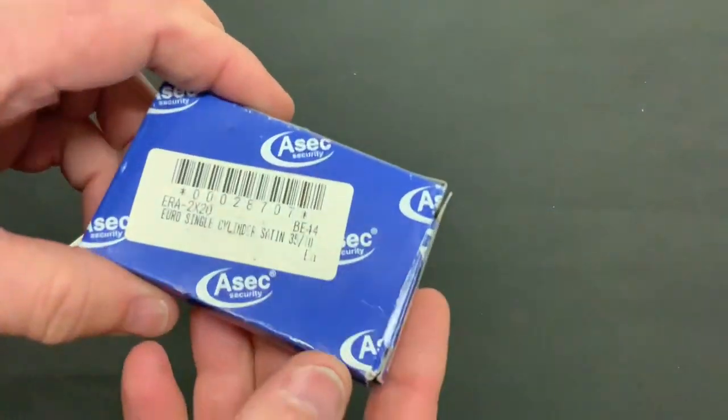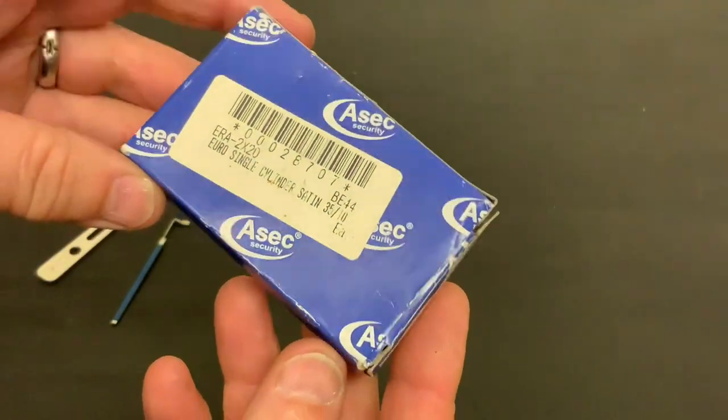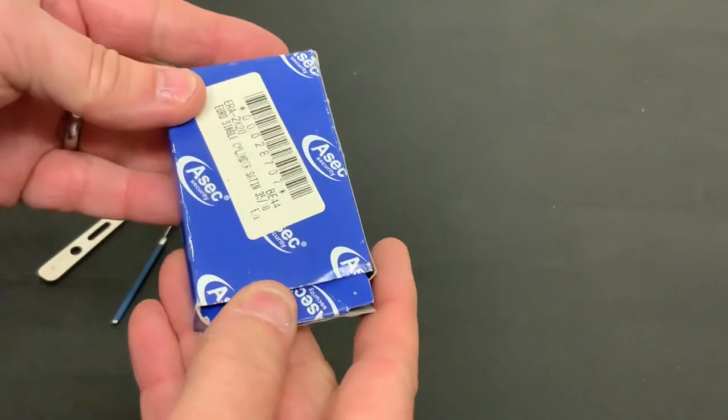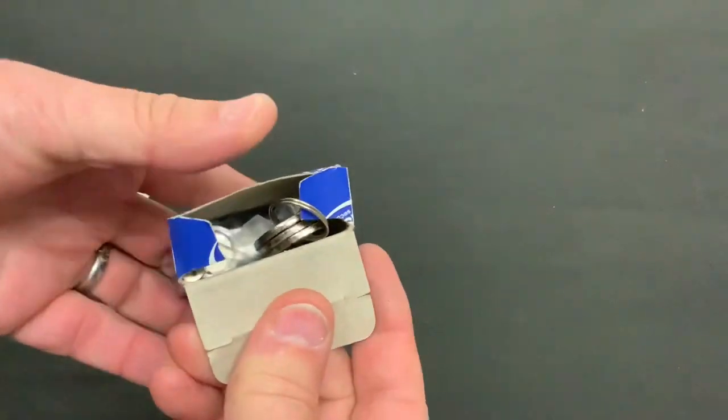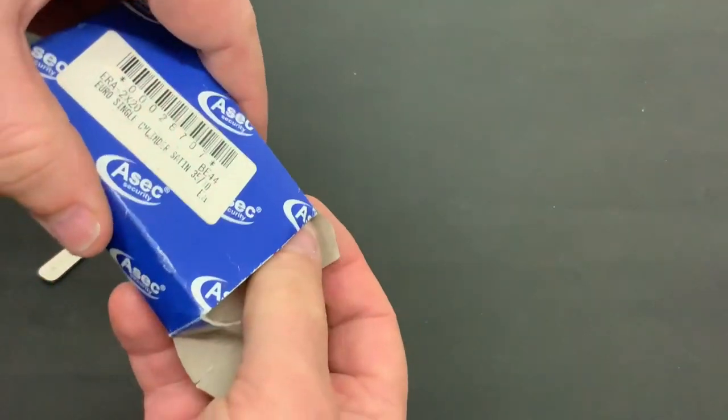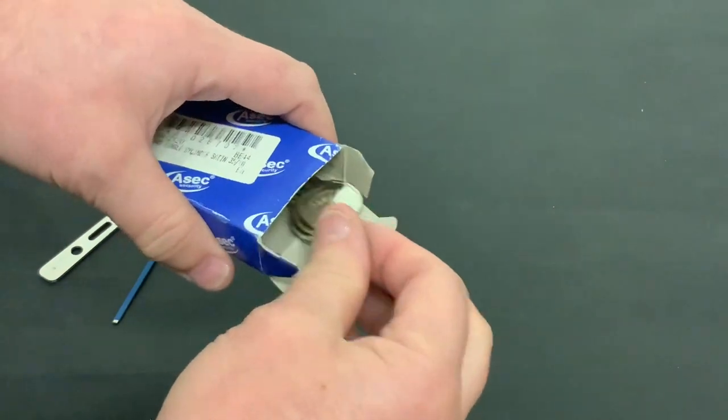Hello again, today I've got a little Euro half-cylinder Azek lock. I've had it a couple of weeks. It came with some other locks and I opened it up, picked it, and put it on the shelf. To be honest, it wasn't much of a pick if I remember right.